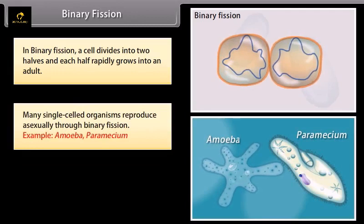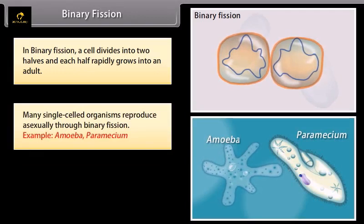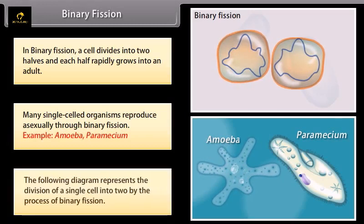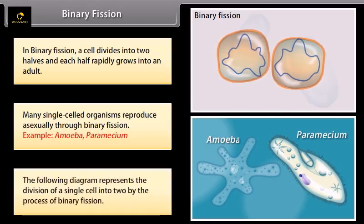Examples of organisms that reproduce by binary fission include Amoeba and Paramecium. The following diagram represents the division of a single cell into two by the process of binary fission.